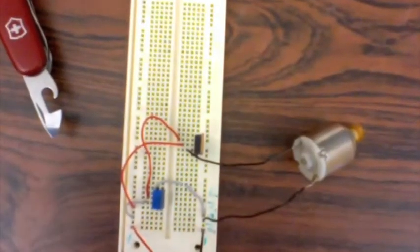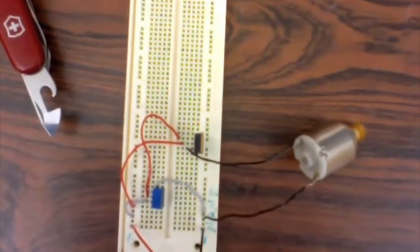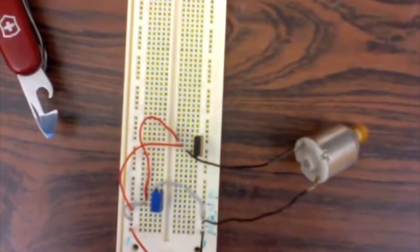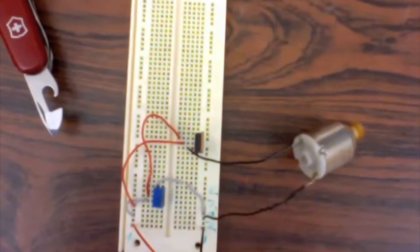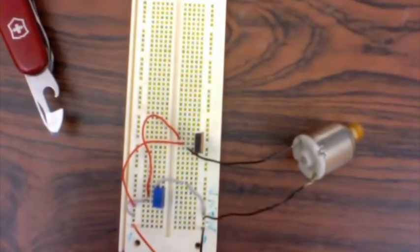So what just happened was the amount of voltage at the base of the transistor was pretty high, and therefore there's a lot of current flowing from the collector to the emitter, which made the motor spin.